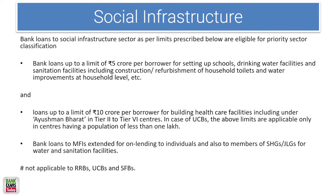Social infrastructure: bank loans of up to 5 crores for setting up schools, drinking water facilities, and sanitation facilities are considered towards priority sector lending. For healthcare facilities under Ayushman Bharat, the limit is 10 crore rupees. These limits have been asked in previous papers. Note: these limits are not applicable to RRBs, UCBs, and SFBs — their loans to this sector count as priority sector regardless.